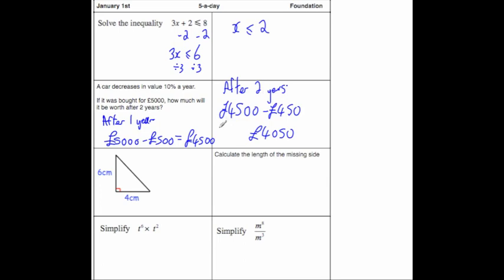Our next question says find the length of the missing side. As you can see, it's a right angle triangle. There's a missing side and we've been given two, so it's a Pythagoras question. That's A squared plus B squared equals C squared. Let's label the sides. A is the smallest, 4. B is the next one, which is 6. And C is the largest, the hypotenuse, which is the unknown one.